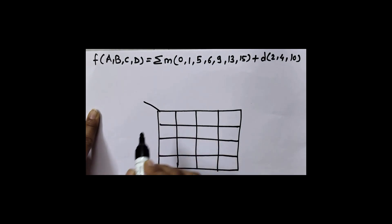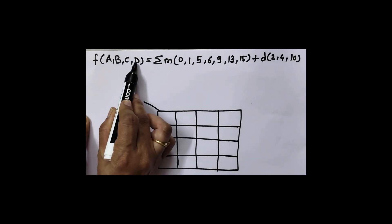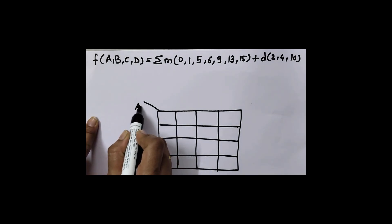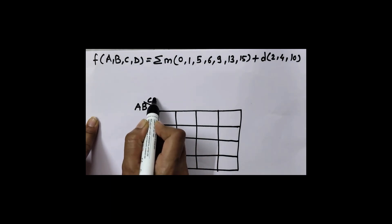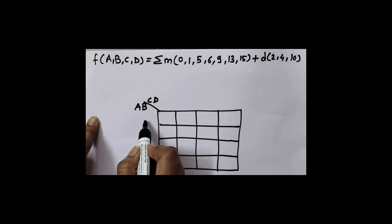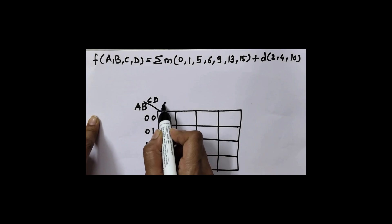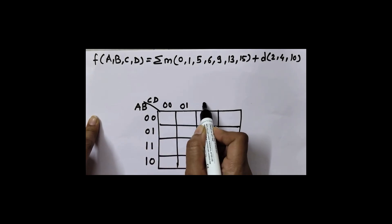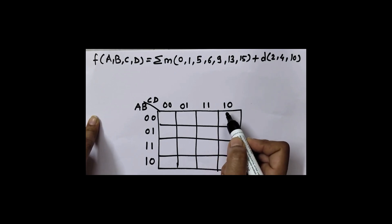Here we need to write the variables. I have 4 variables: A is my MSB, D is my LSB. So I'll write AB on top and CD on the side. In K-map we use grey numbers, we don't use binary code. So in grey code it is 00, 01, 11, 10. Here also 00, 01, 11, 10.